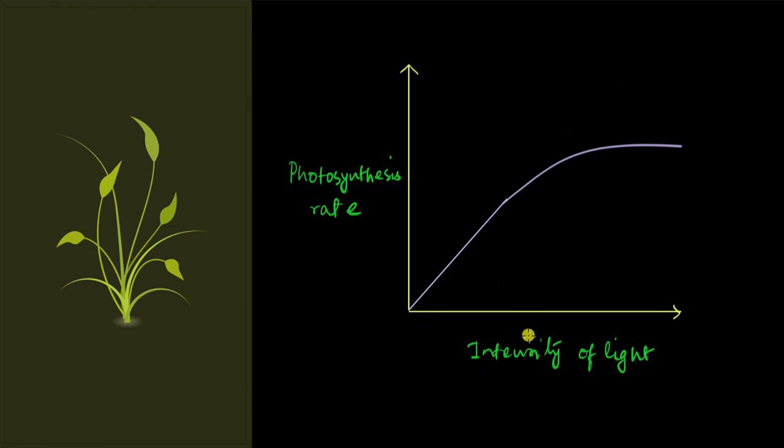So the photosynthesis rate typically gets saturated at only 10% of full sunlight.